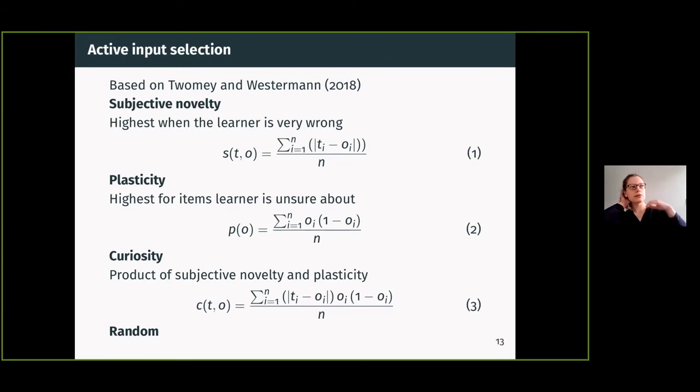We have a measure that says whether we are wrong, and we have a measure that says whether we expect to be wrong—whether we have made up our mind very clearly or not.